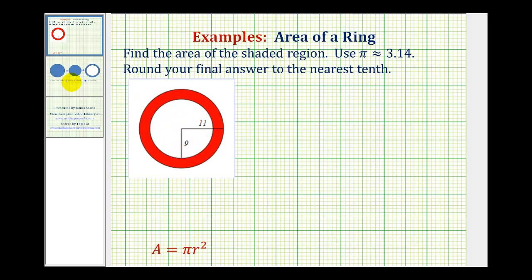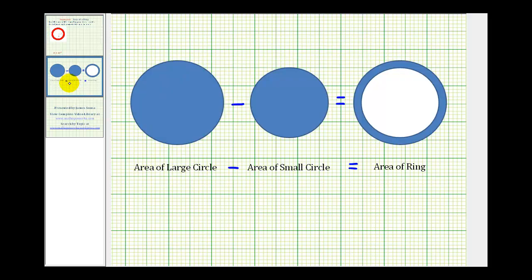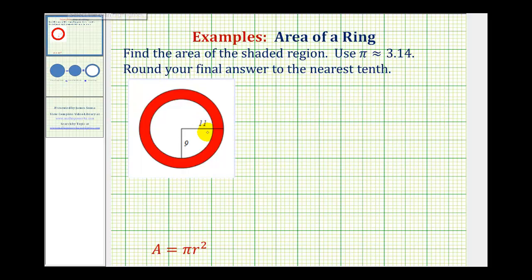To look at this in more detail, let's take a look at this diagram. The idea is, if we find the area of this large circle and find the area of this small circle, and then subtract the areas, it's going to leave us with the area of this blue ring, or this blue shaded region. The large circle has a radius of 11 units, and the small circle has a radius of 9 units.